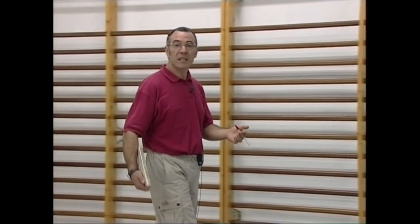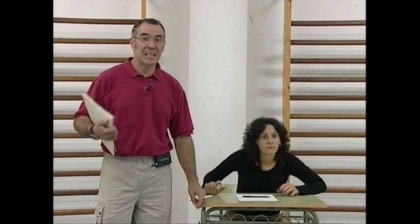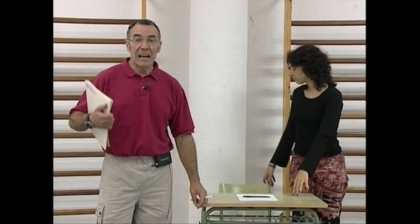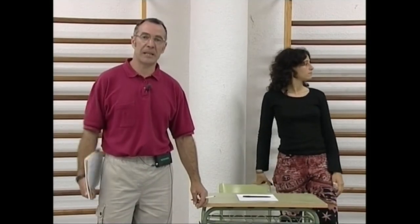Baina zer gertatzen da pertsonaia mugitzen hasten denean? Eta mugitu ez ezik, bere begiradaren norabidea alde batera, bestera, aurrera, atzera eramaten duenean? Ba, triangelua berdin-berdin ezartzen da. Bakar-bakarrik kontuan izan behar dugu, ekintzaren ardatza aldatu egiten dela, aktorearen begiradaren norabidea aldatzen den aldiberean.